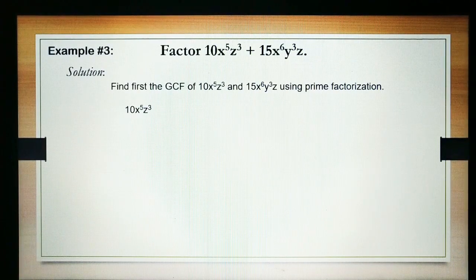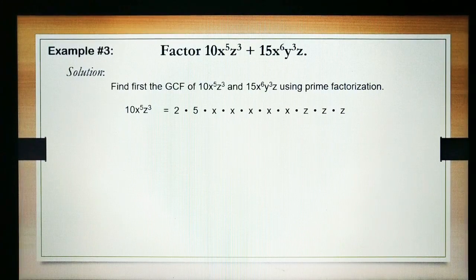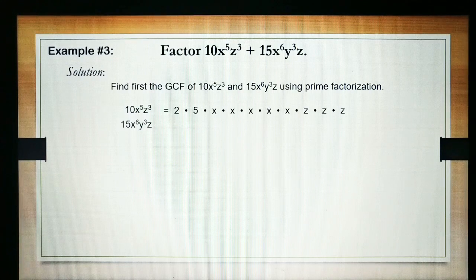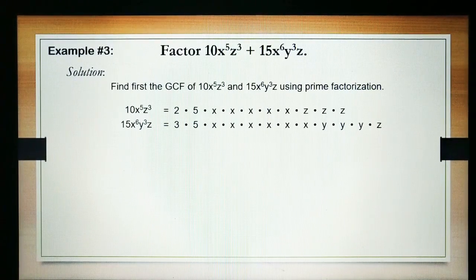The first term: 10x to the 5th power z cubed is equal to 2 times 5, which is 10, times x times x times x times x times x times z times z times z. The second term: 15x to the 6th power y cubed z is equal to 3 times 5, which is 15, times x times x times x times x times x times x times y times y times y times z.